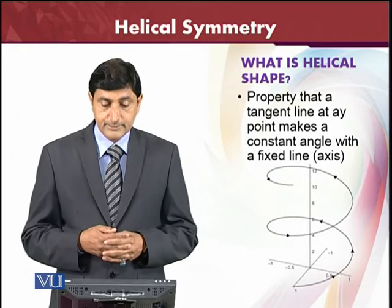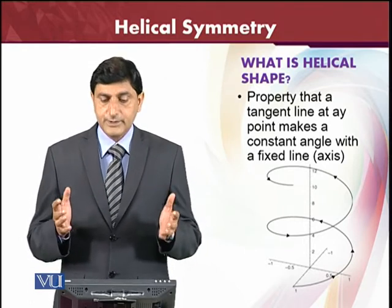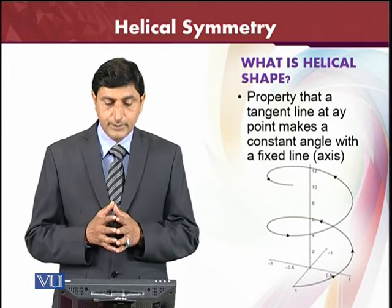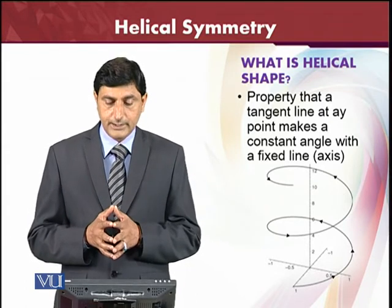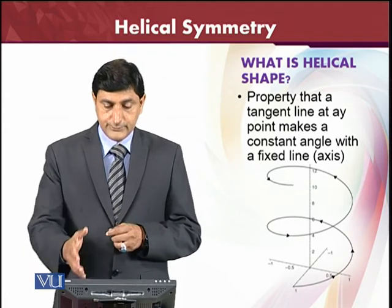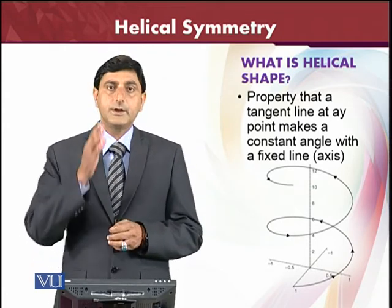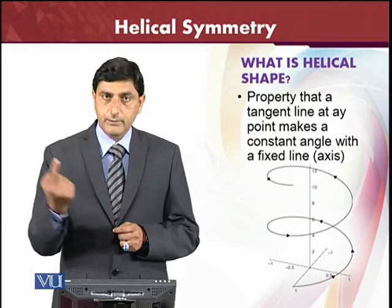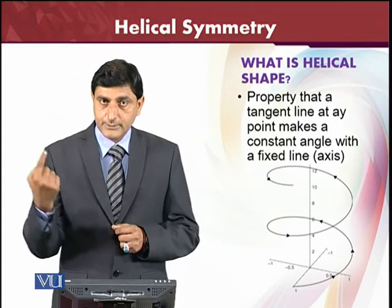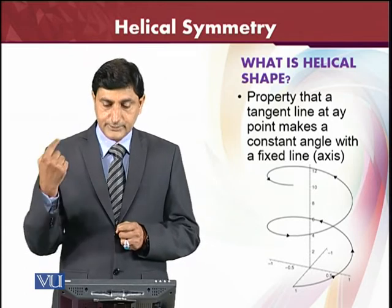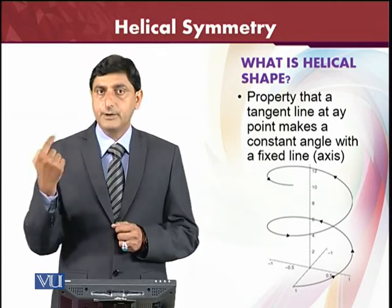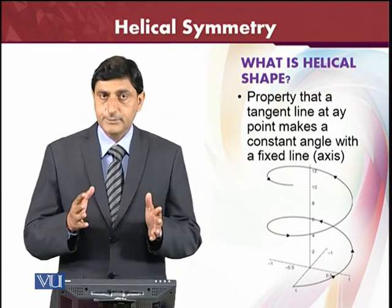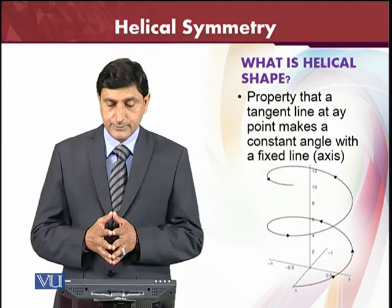So what is the helical shape? A helical shape is such a shape that a tangent line at any point makes a constant angle with a fixed line. As it's clear from the pictures given, there is a line in the middle and a tangent line revolving around it at a special distance. This is called helical symmetry.